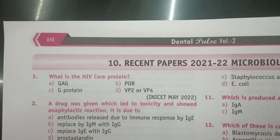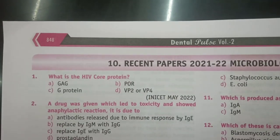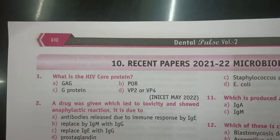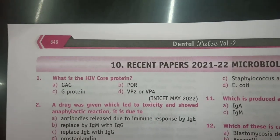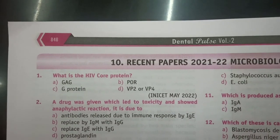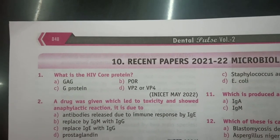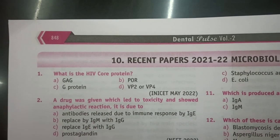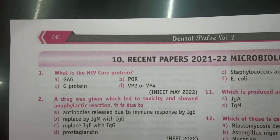What is the HIV core protein? Option A: GAG. Option B: POR. Option C: G protein. Option D: VP2 or VP4.